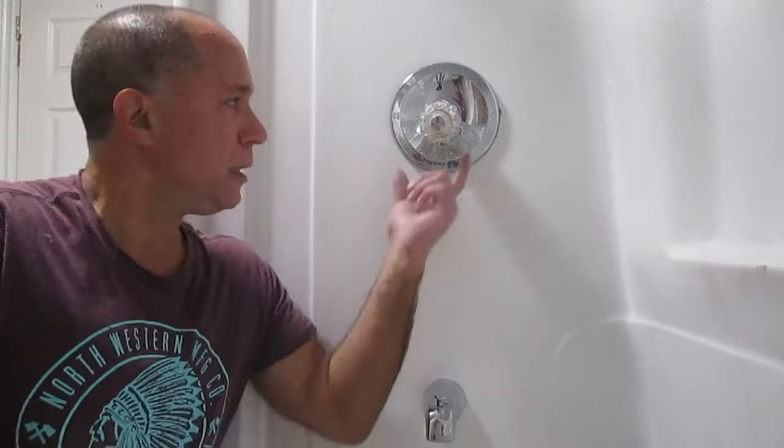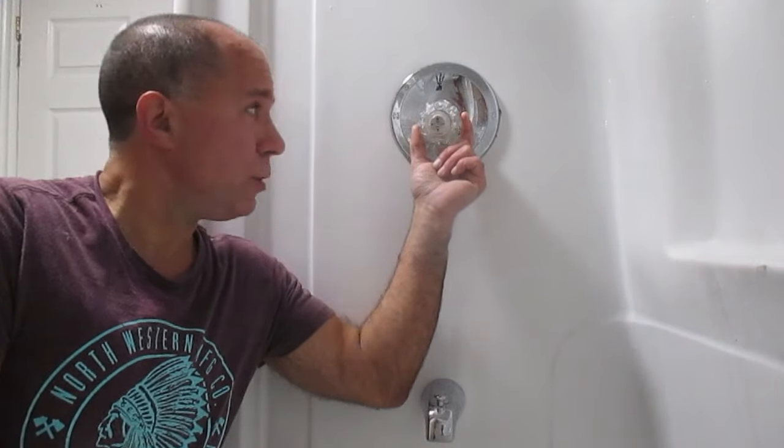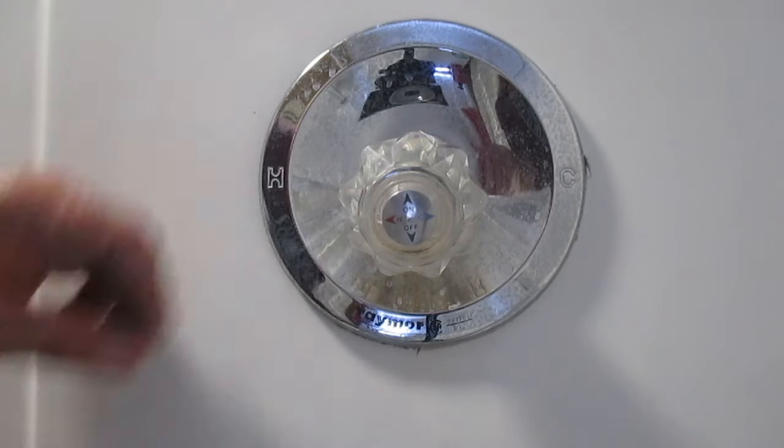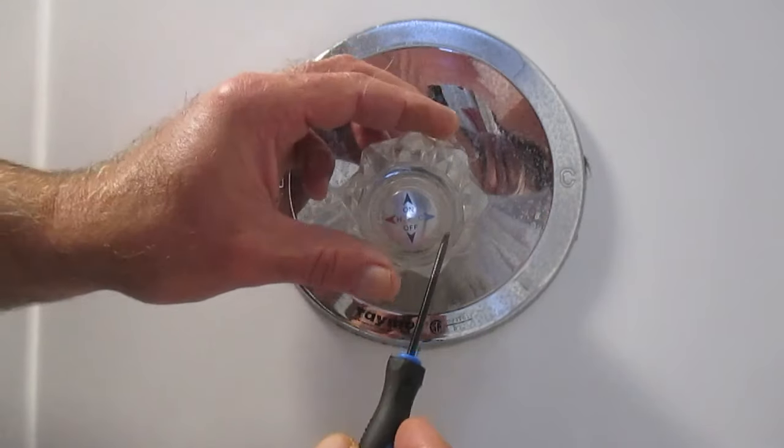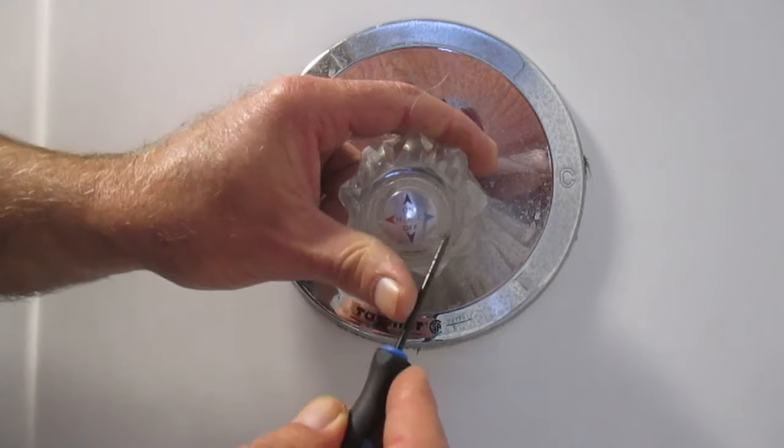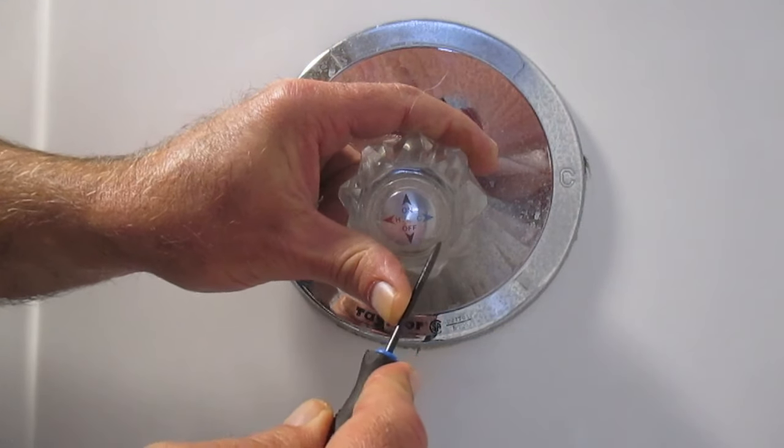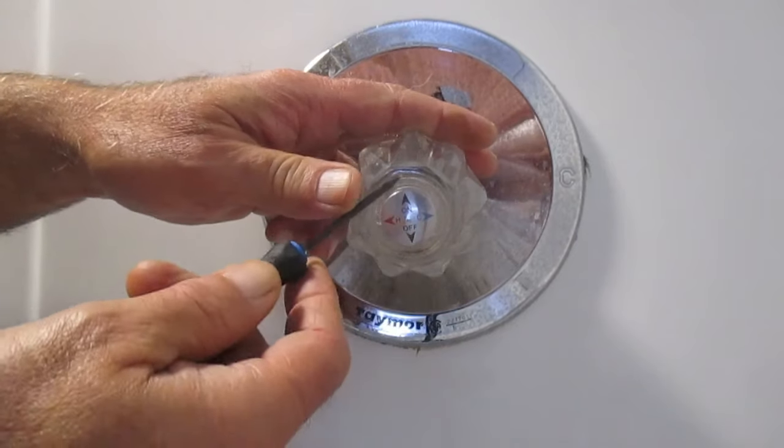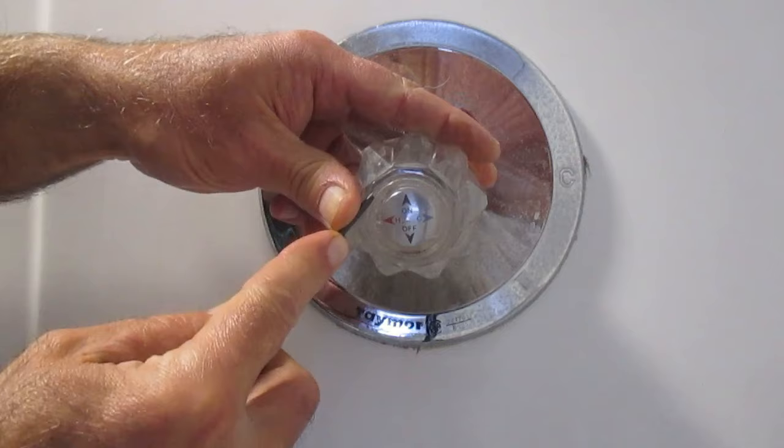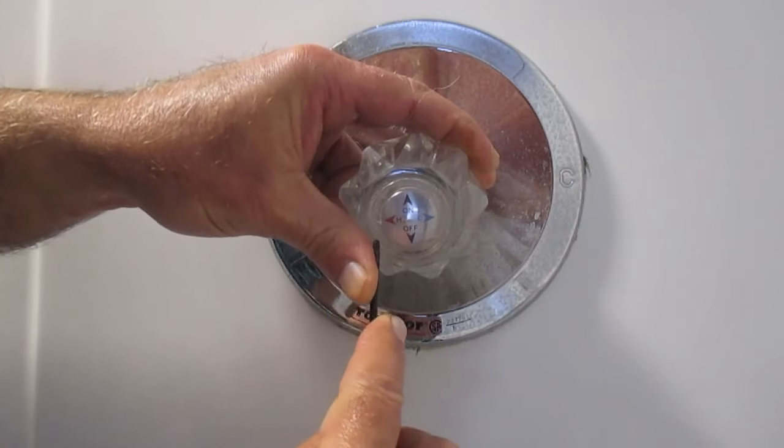In today's video I'm going to show you how to replace a bathtub faucet handle that is a single unit handle like this one. This cover will pop off. I'm going to take something like a small flathead screwdriver like this. I've also used box cutter knives and just gone around it like this to loosen it off.